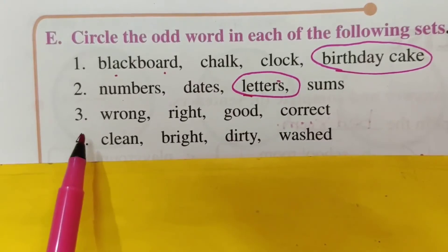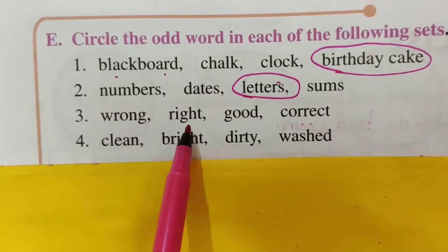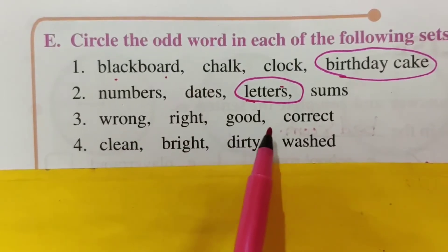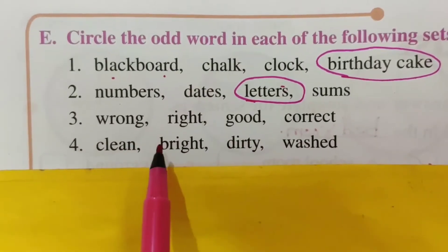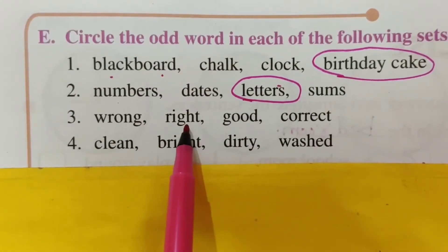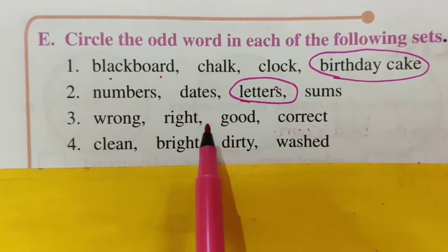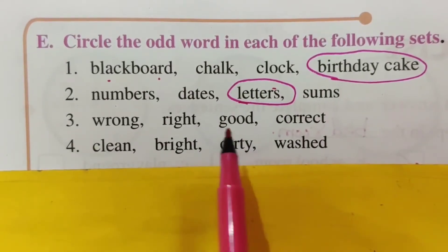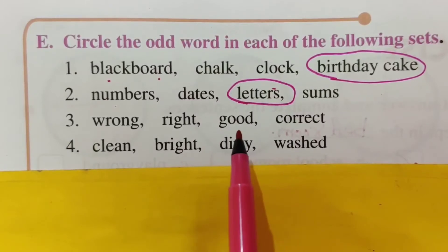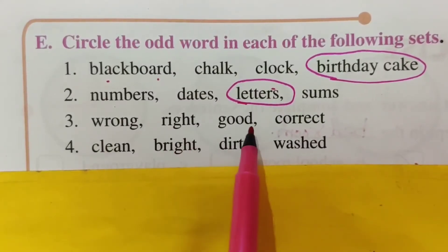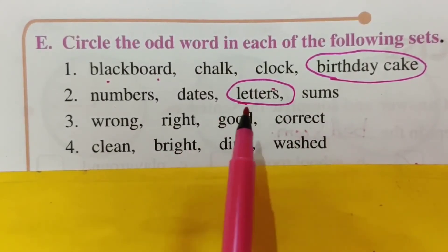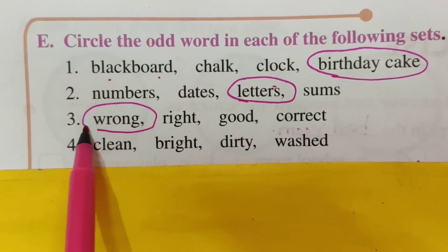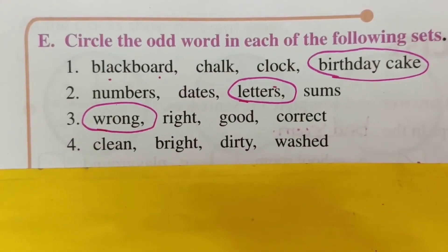Now see the third set: wrong, right, good, correct. From these words, which is different? Right means correct, and good also means the same kind of idea. Right, good, and correct are all related. Wrong is completely different. So circle 'wrong.'